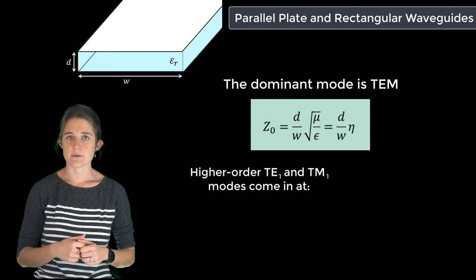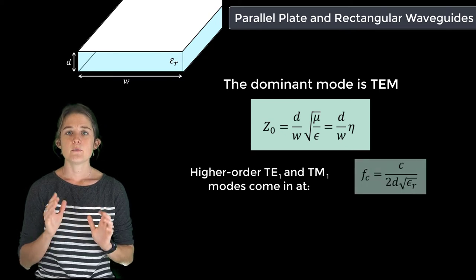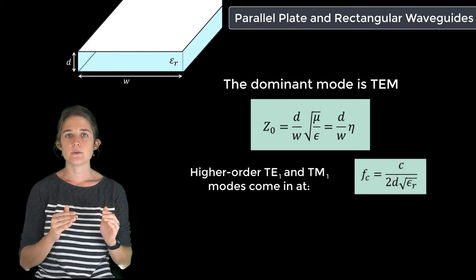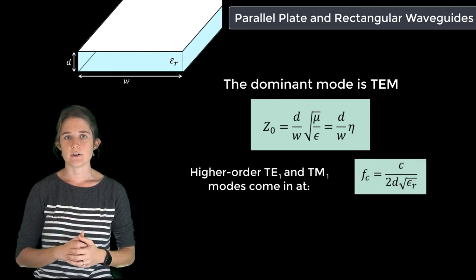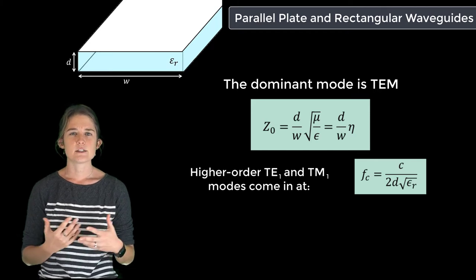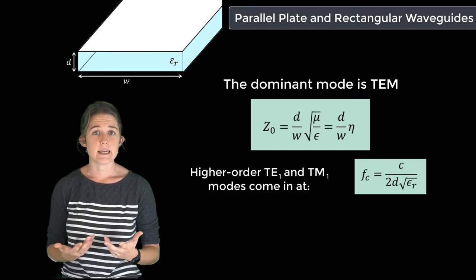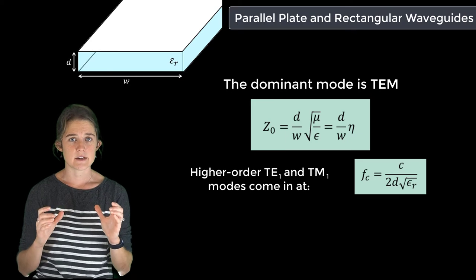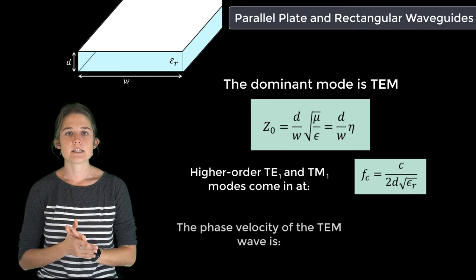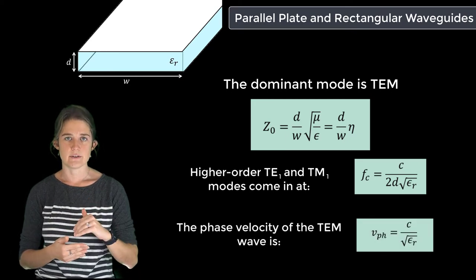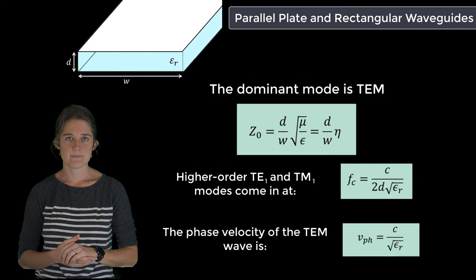The first higher order mode cutoff frequency is equal to c over 2d times the square root of epsilon r. Since the wave is TEM and entirely contained within the dielectric, the phase velocity is c over the square root of epsilon r.